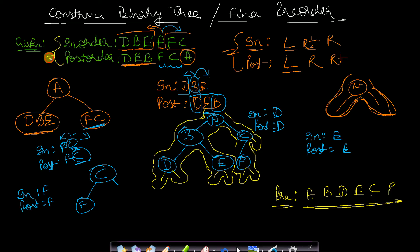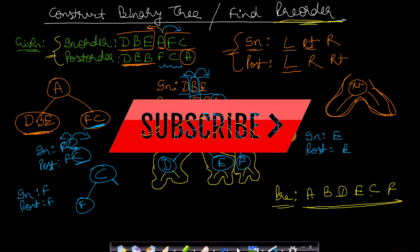So given in-order and post-order, you first construct the binary tree, and after constructing you can easily find the pre-order traversal. I hope you understood this lecture. If you have any problems, comment below. Like and share our video and subscribe to our channel to watch more programming videos. See you in the next video, thank you.